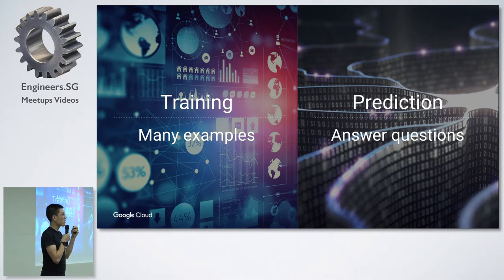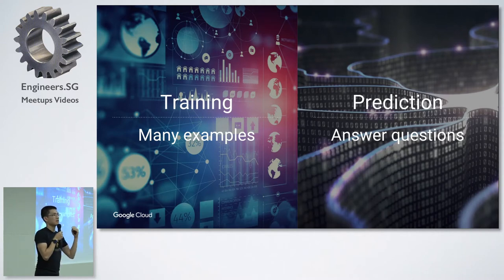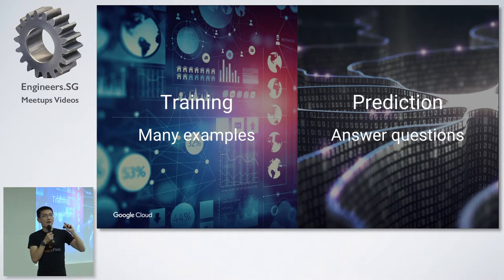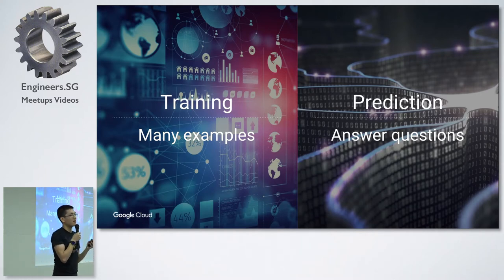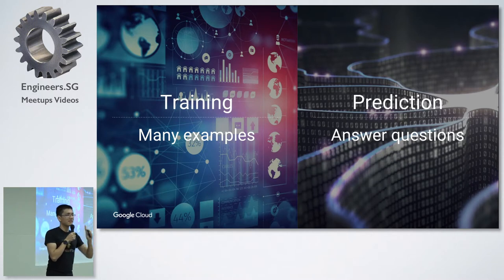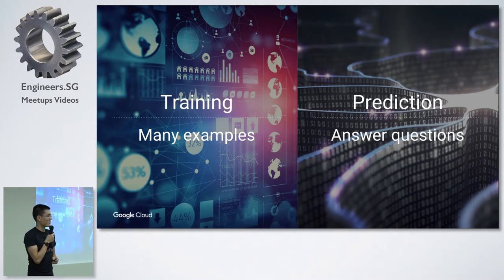Machine learning is extra challenging because of that. You have these two aspects that are fundamentally different. Training requires a certain mindset where you're thinking about the data, its structure, and how you can get more information out of it. But when you start serving predictions, you have to switch to another mode to think about how you can serve those predictions. We'll look at that and all the steps in between — I promised seven steps, there's only two here so don't worry, you'll get your money's worth.